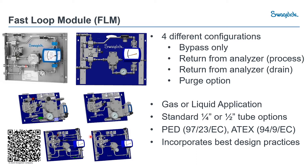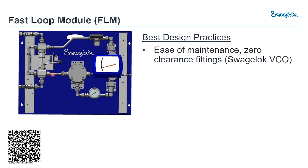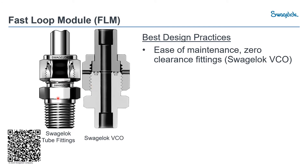Let me explain what best design practice means. Typically, fast loop systems appear straightforward, but they are not always easy to maintain. For example, if you try to service the self-cleaning swirl filter on a compact panel using standard tube fittings, you need to undo the nut and pull the tubing out — which isn't possible in a compact space. That's why we use Swagelok VCO zero-clearance fittings, where you just undo the nut and pull out the component without needing any free play. VCO fittings are also used in the semiconductor industry for this same reason.